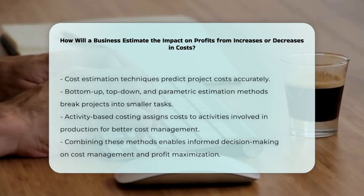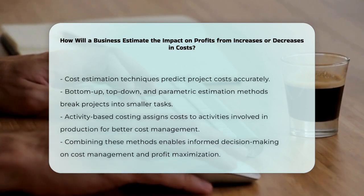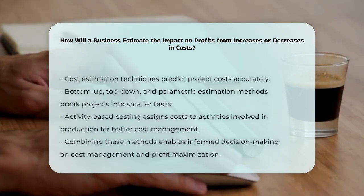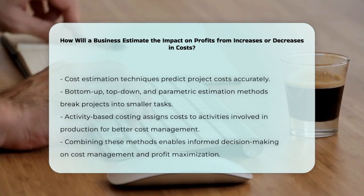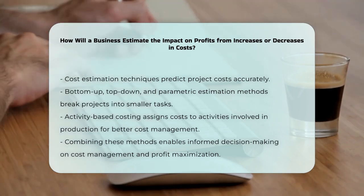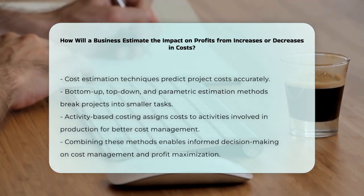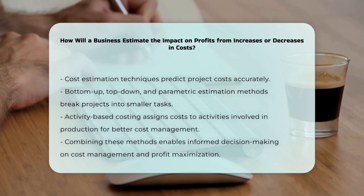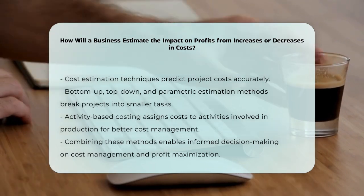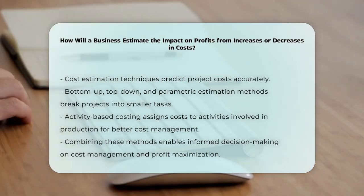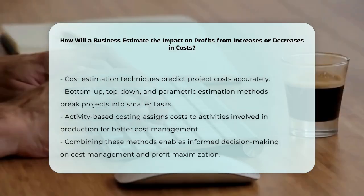For instance, if you're using activity-based costing, you identify the activities involved in producing a product and assign a cost to each activity. This helps in identifying areas where costs can be reduced, such as by eliminating non-essential activities or finding cheaper suppliers.